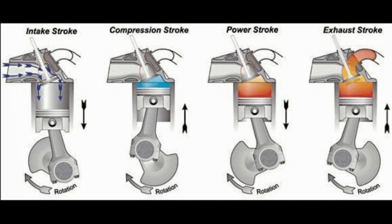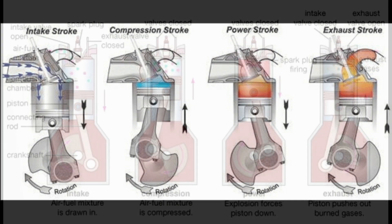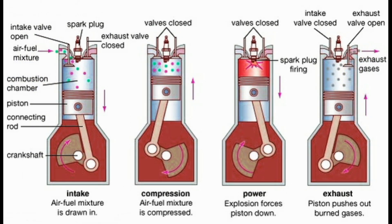The main components of a spark ignition engine are as follows. Inlet valve: the air-fuel mixture enters into the cylinder through the inlet valve. Exhaust valve: the burnt or exhaust gases produced in the power stroke escape out through the exhaust valve. Spark plug: it produces a spark at the end of the compression stroke, which ignites the compressed air-fuel mixture. Cylinder: it is a hollow cylinder in which the piston reciprocates.